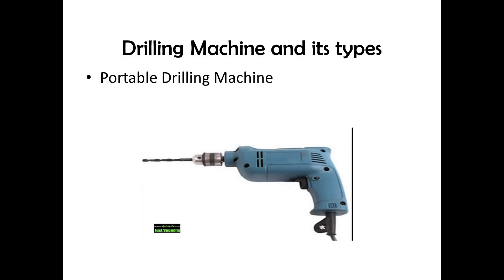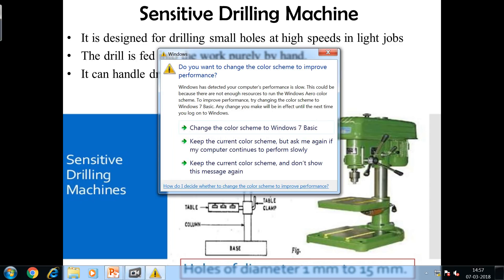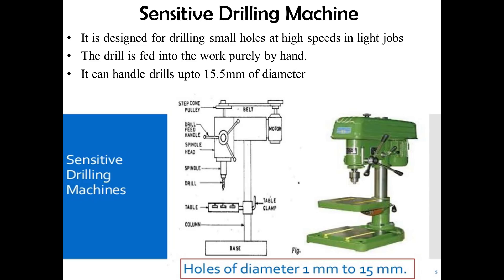The first type is the portable drilling machine, just for general knowledge. The second type is the sensitive drilling machine, shown here with an actual diagram and 3D schematic image. Sensitive drilling machines are normally preferred for small, light duty applications where the drill bit dimension is limited to 15 mm. So when the diameter is less than 15 mm, we can use this type of machine for small holes at high speed. For light jobs we prefer the sensitive drilling machine, where the drill is fed into the work purely by hand.